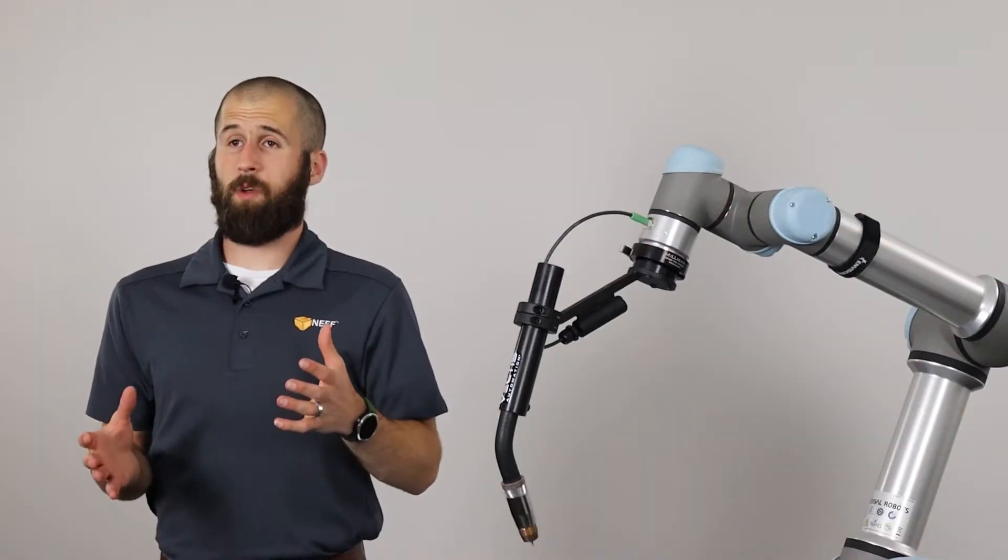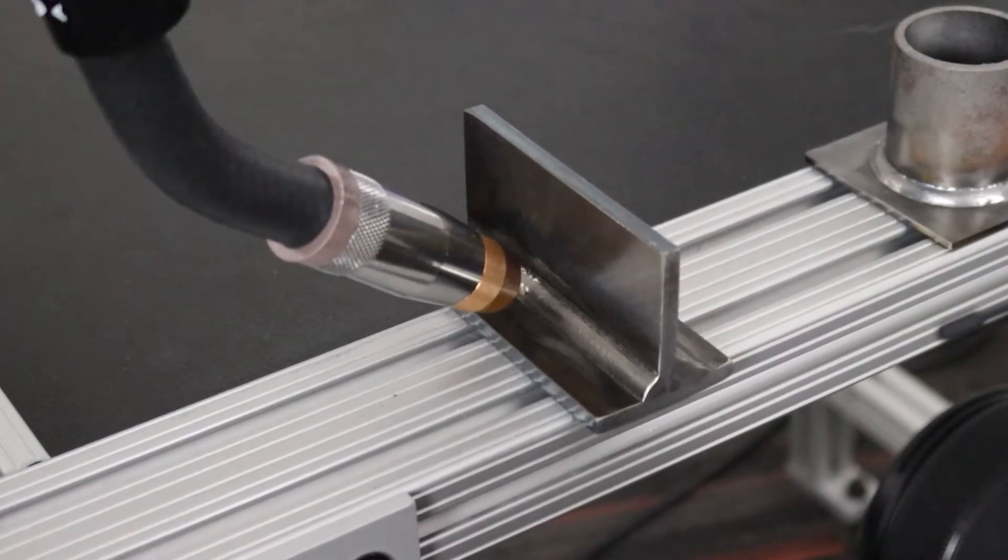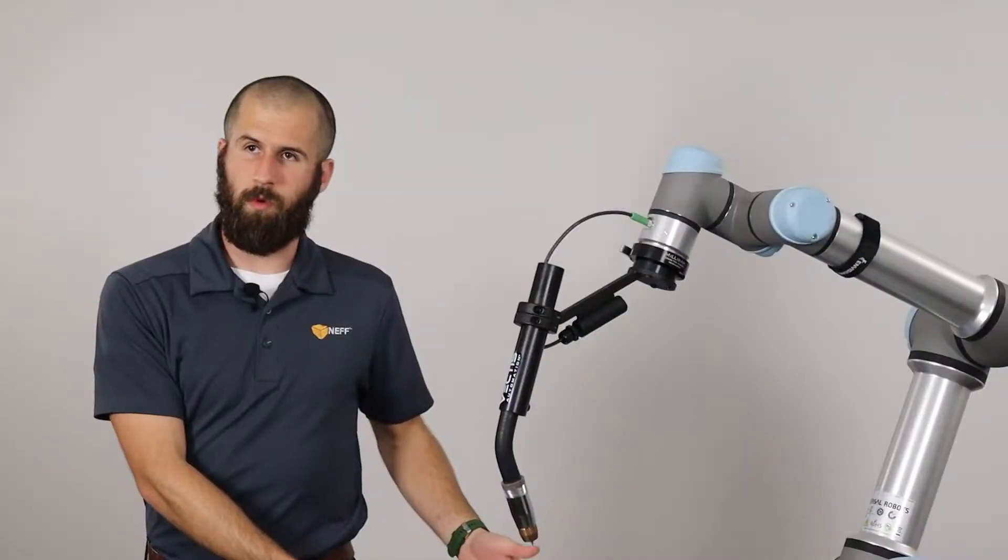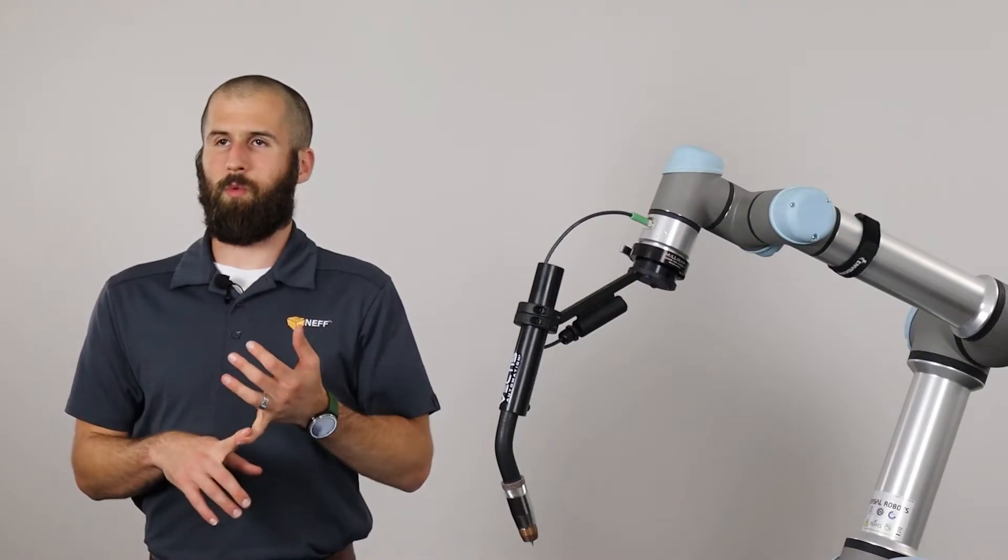The Vectis system as a whole is very mobile and versatile. You can have it do a multitude of different parts with all of the programming done seamlessly in the Universal Robots polyscope. So the ease of programming of the UR is the same programming that you'll do for the welding.